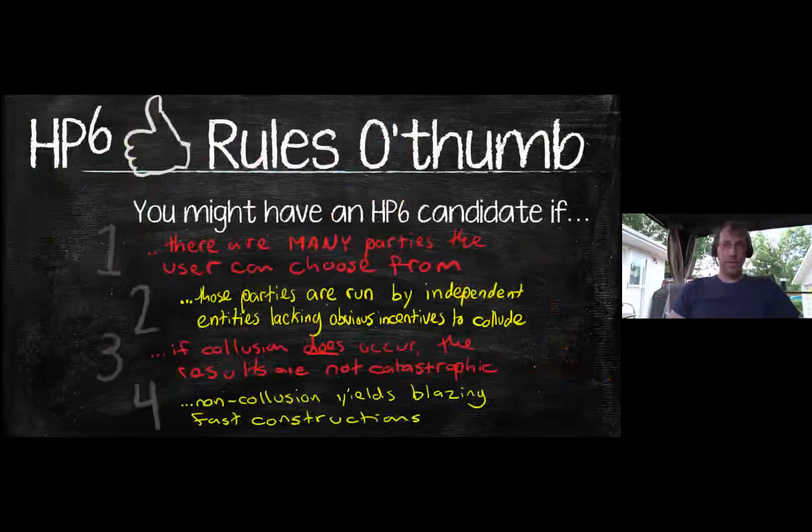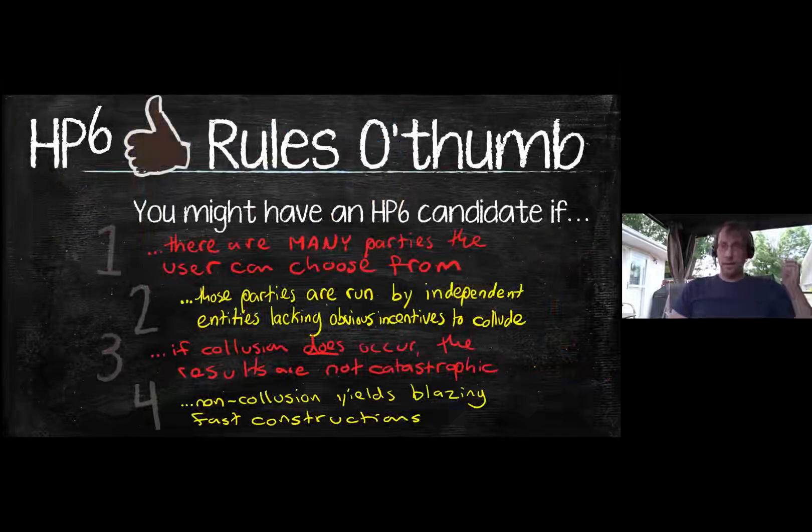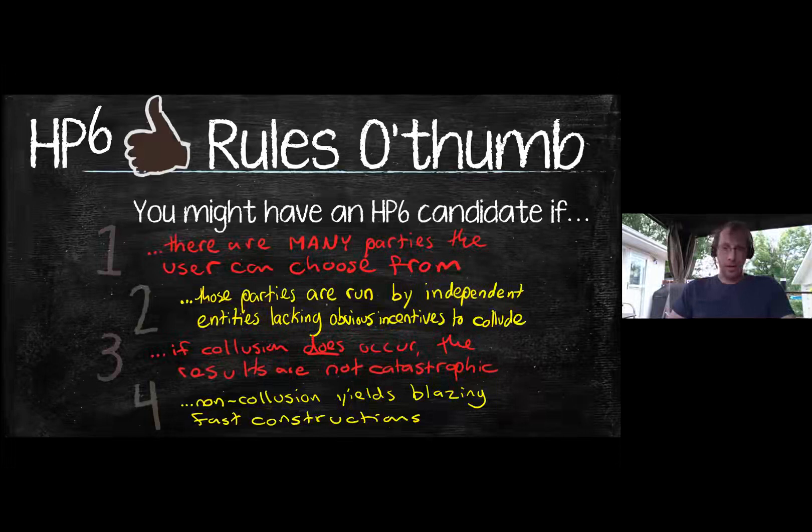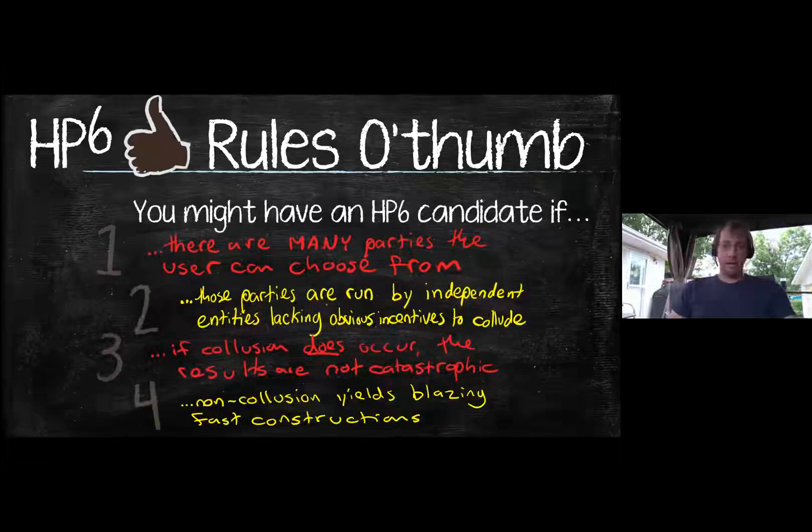So to summarize the four rules of thumb: there's many servers to choose from, they don't really have any obvious incentives to be colluding. So hopefully if you choose them at random, the ones you chose aren't colluding with one another. When collusion does occur, the world doesn't come to an end. And the fact that you're relying on this non-collusion assumption lets you build something that is blazing fast compared to all other private alternatives that exist.